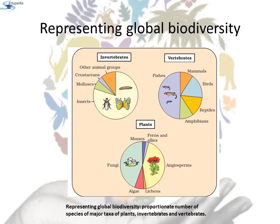This is the representation of global biodiversity — the proportionate number of species of major taxa of plants, invertebrates, and vertebrates seen on Earth.